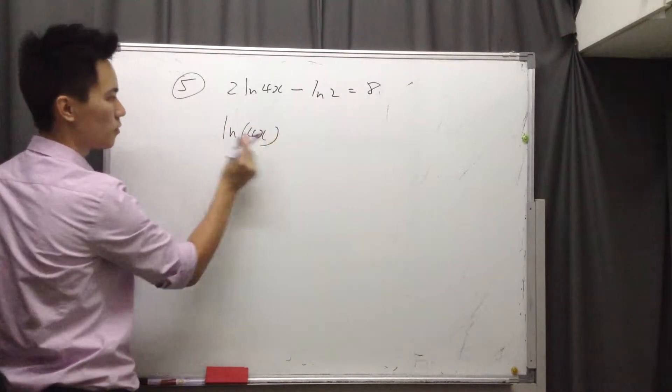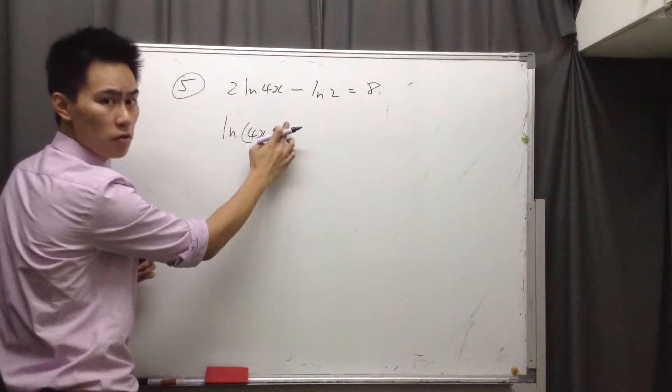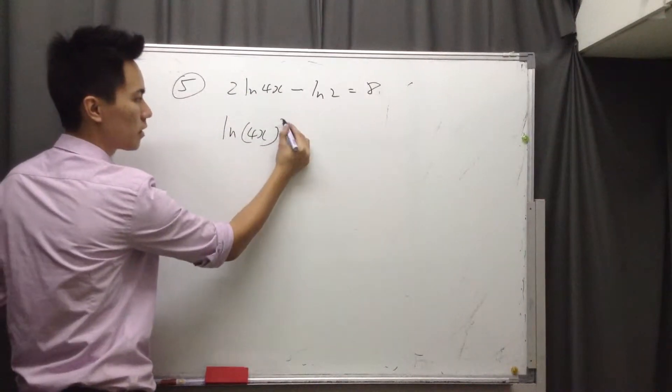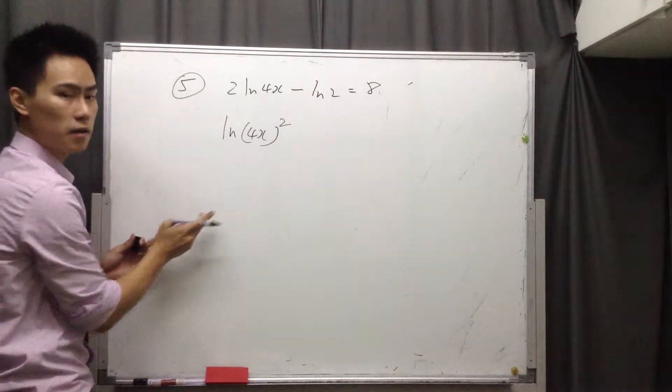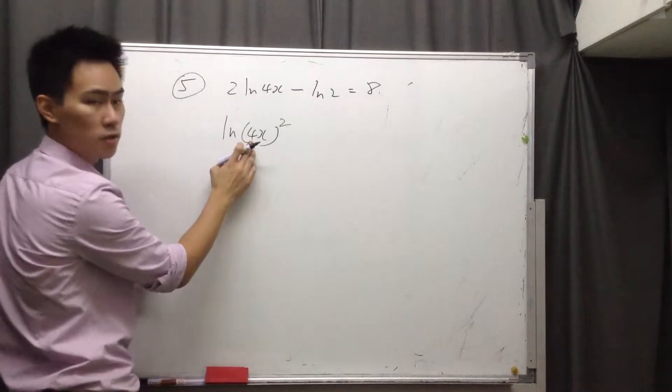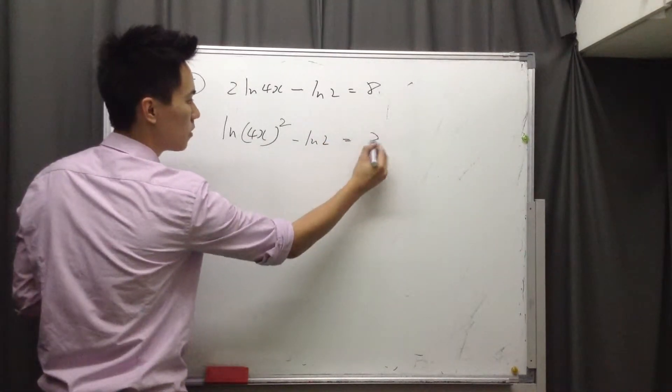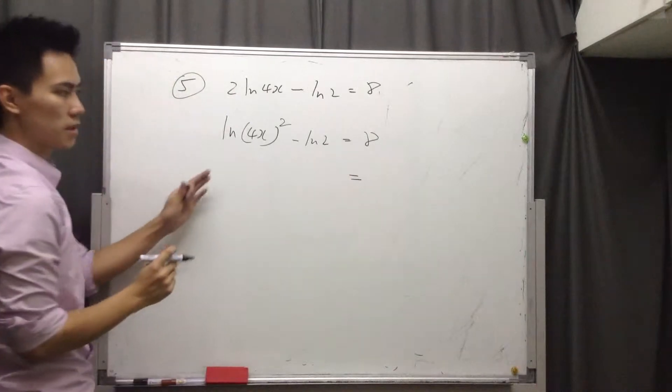So the first step you need to do is put the power, or actually put these two back to the power. But remember, add a bracket instead of just writing 4x squared, or else you won't get 16. So minus 2 ln 2 equals 8. So this is the first step.